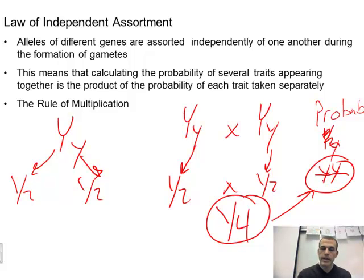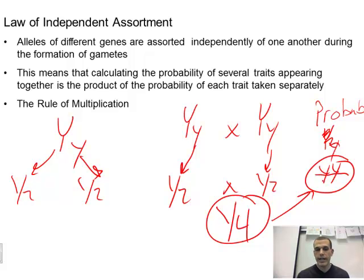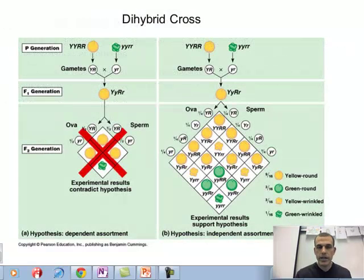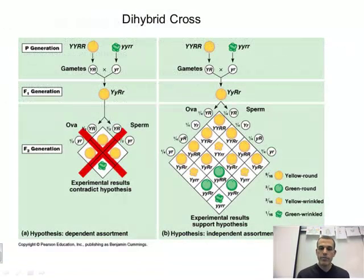Because of the separation that occurs in the law of segregation, and because they separate independent of each other, they do not relate to each other when we're talking about the separation. So kind of going along with that idea, we're going to take a look at something called a dihybrid cross.